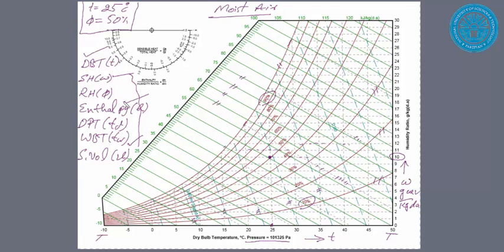Similarly, we can see the enthalpy at that point, close to this line. And this line is, if you see extended all the way, it's around 50 kilojoules per kilogram of dry air.